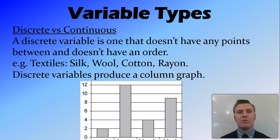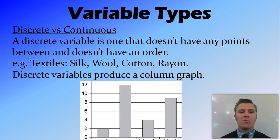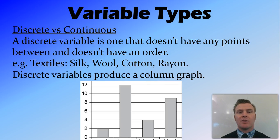Discrete variables, on the other hand, don't have a particular order and there aren't any points between them. For example, if our independent variable were different textiles — silk, wool, cotton, rayon — there's nothing halfway between silk and wool. You could also put them in any order and it would make just as much sense. When using discrete variables as your independent variable, the appropriate graph is a column graph, which is not what we want for this assessment.